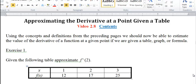The first exercise is we're given this following table of values for x and f(x): 1, 12; 2, 17; and 3, 25—or three points on the graph of y equals f(x).